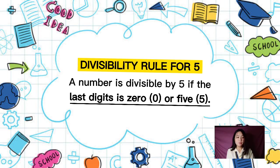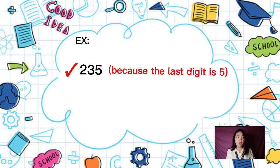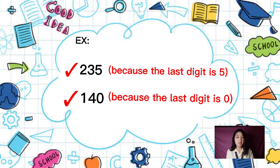A number is divisible by 5 if the last digit is 0 or 5. For example, 235 is divisible by 5 because the last digit is 5. Also, 140 is divisible by 5 because the last digit is 0.